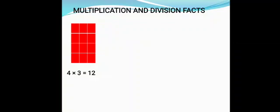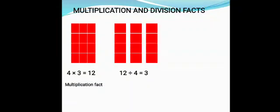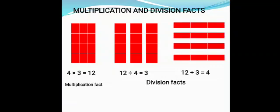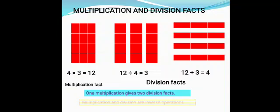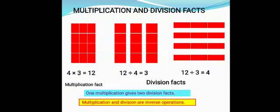Multiplication and division facts. Here you can see 4 × 3 = 12; this is a multiplication fact. Now look at another way: 12 ÷ 4 = 3, or 12 ÷ 3 = 4. One multiplication gives two division facts. This tells us that division is the inverse of multiplication — when we divide the product 12 by one of its factors, 4 or 3, the quotient we get is the other factor, 3 or 4.